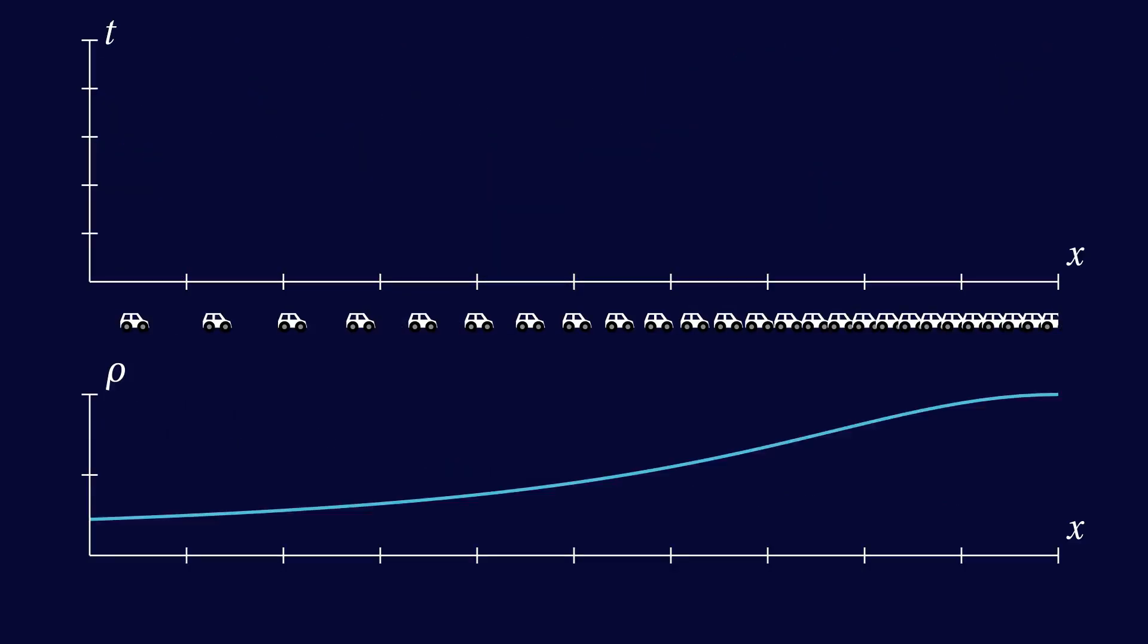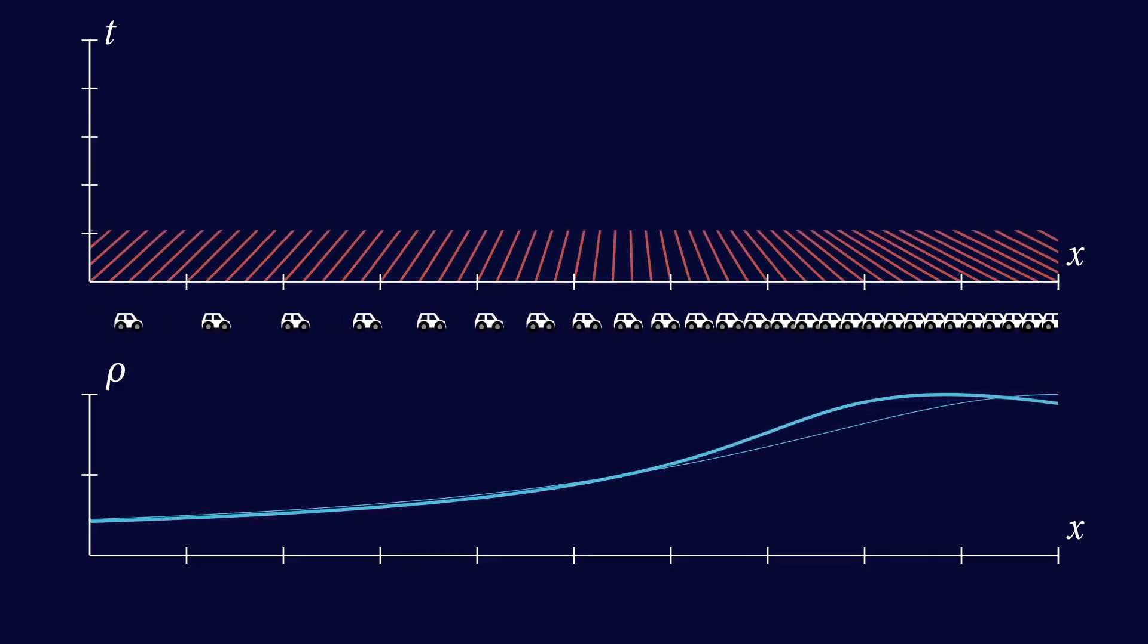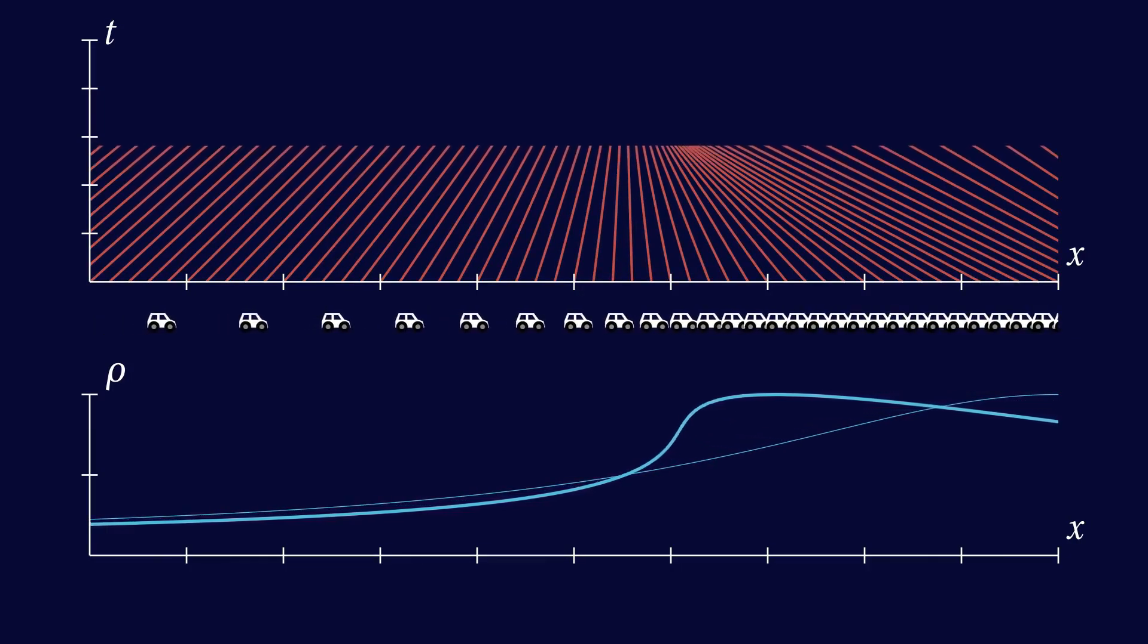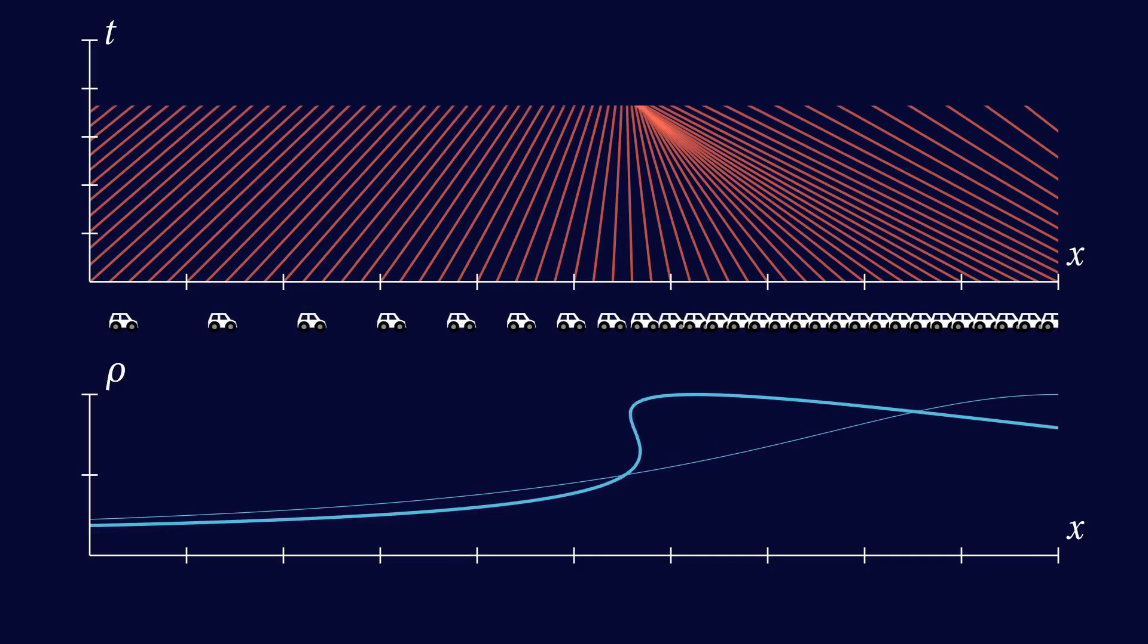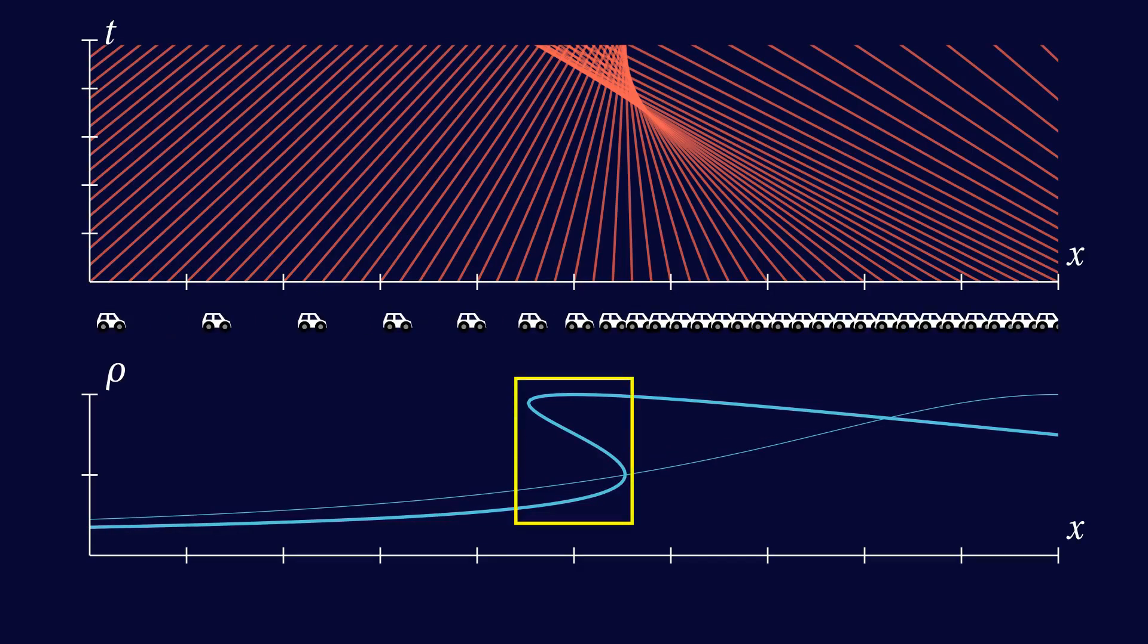If the initial traffic density increases from left to right, the characteristics slope towards each other. At some point, they will intersect. Now, if we have several characteristics going through the same point, we will find several different values when we try to reconstruct the density curve. So instead of the graph of a function, we get a meaningless S-shaped curve. So we cannot have intersecting characteristics.